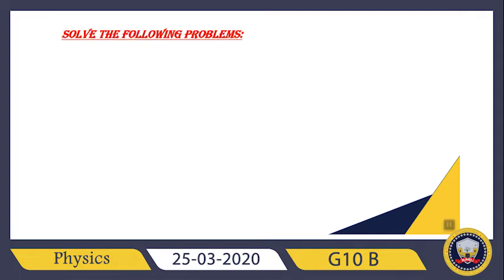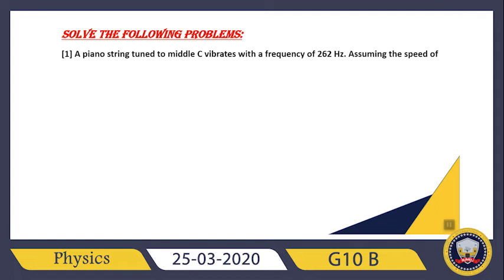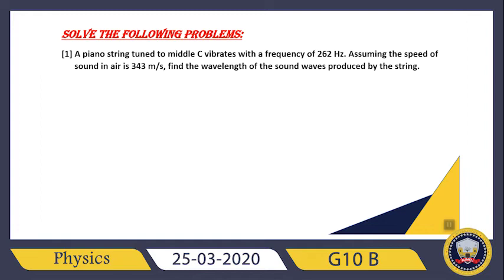Let's solve some problems together. Number one: a piano string tuned to middle C vibrates with a frequency of 262 Hz. Assuming the speed of sound in air is 343 m/s, find the wavelength of the sound wave produced. We have f and V, so we calculate λ. Using V = f × λ, lambda equals V divided by f: 343 ÷ 262 = 1.31 meters.